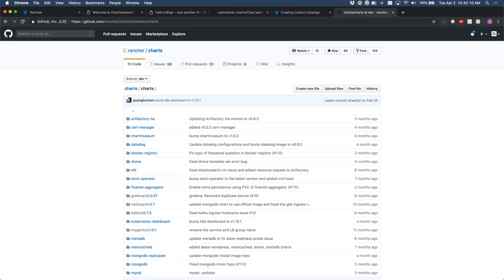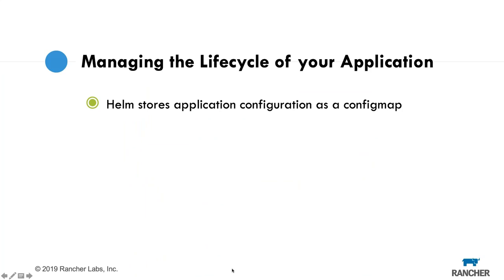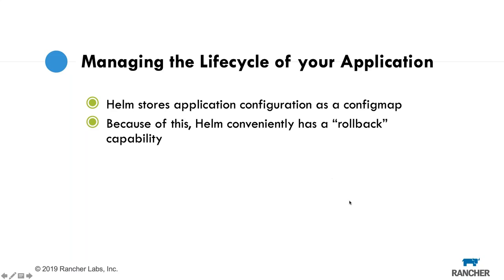There's just one last bit on my presentation: managing the lifecycle of your application. Helm stores your application configuration as a ConfigMap. What's really nice is that Helm has a rollback capability. Earlier versions of Helm didn't do any compression, so you'd store giant ConfigMaps that were too big for Kubernetes. Now it does compression. As I can push new versions of my Helm chart, I can do a rollback from a later version back to an earlier version, as long as we still have that old ConfigMap.